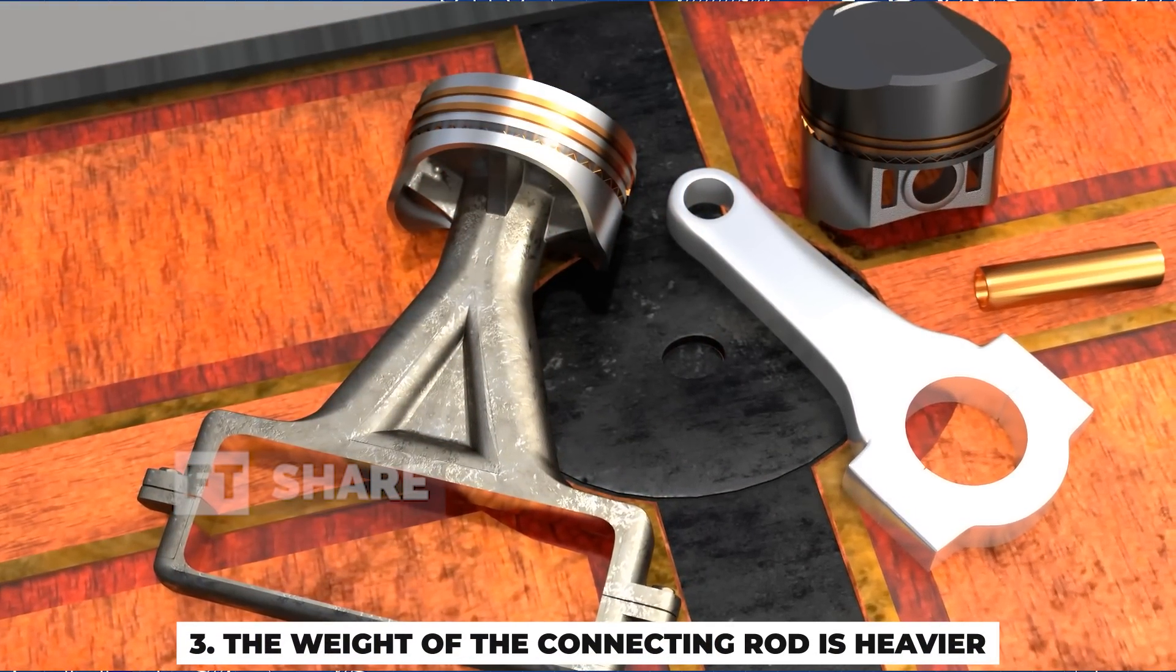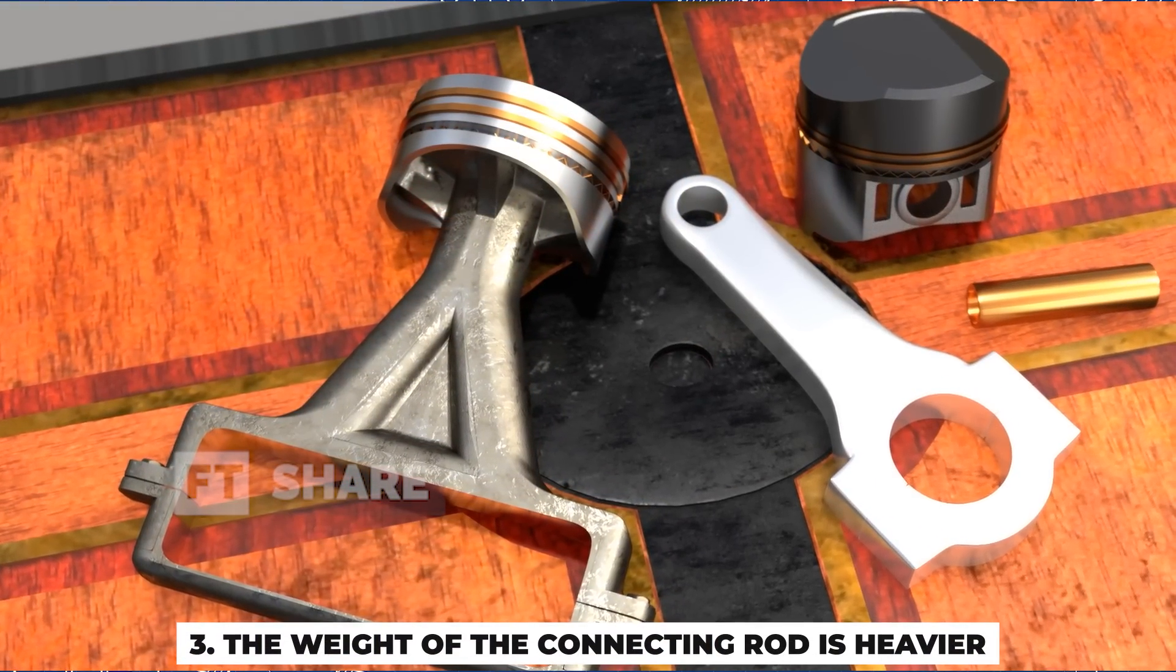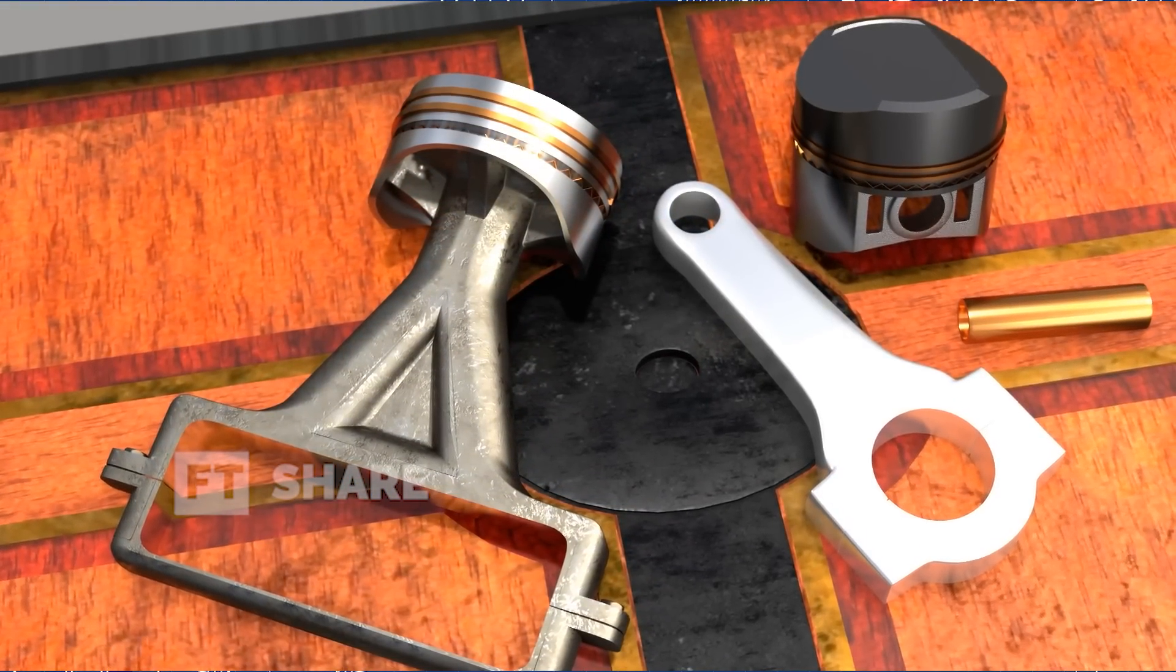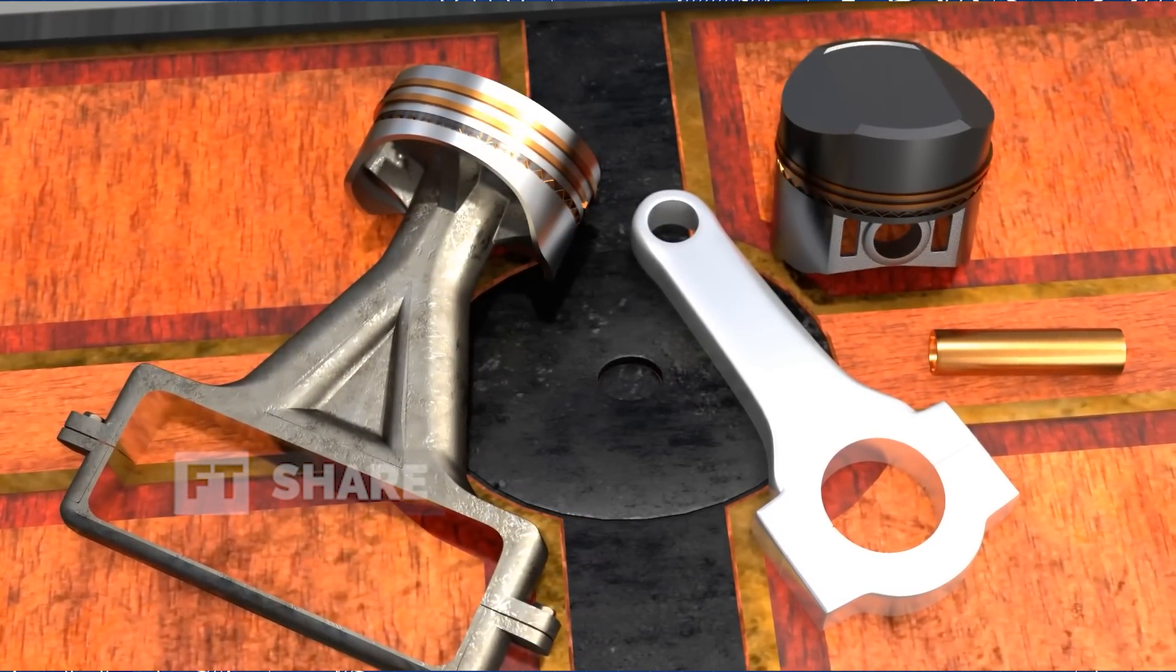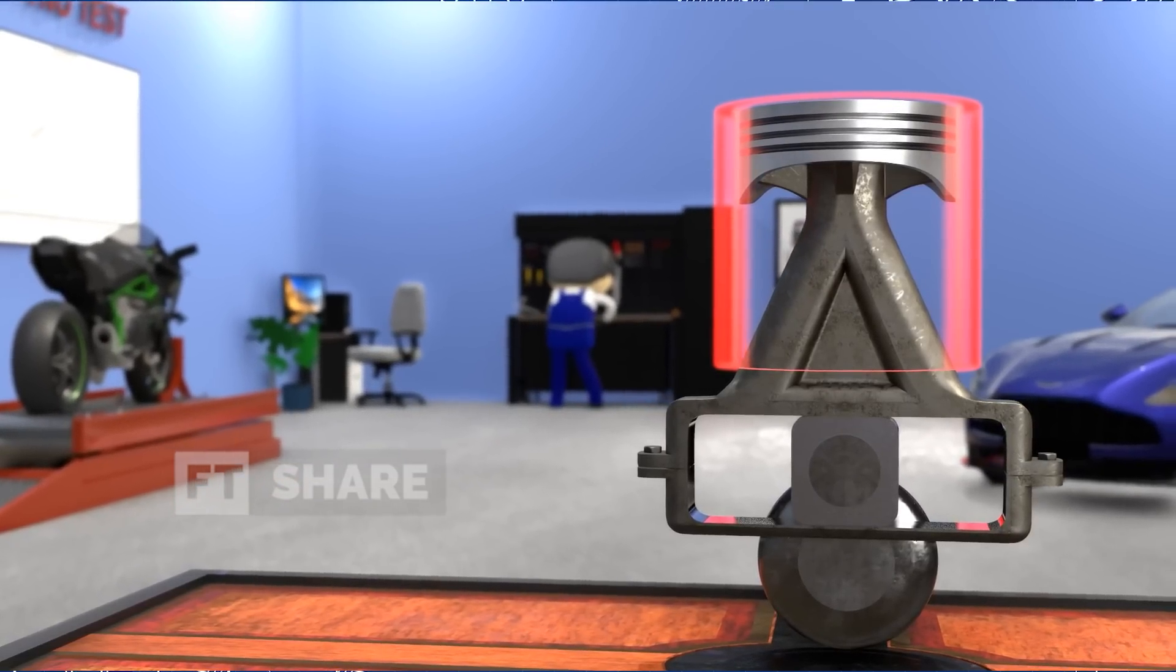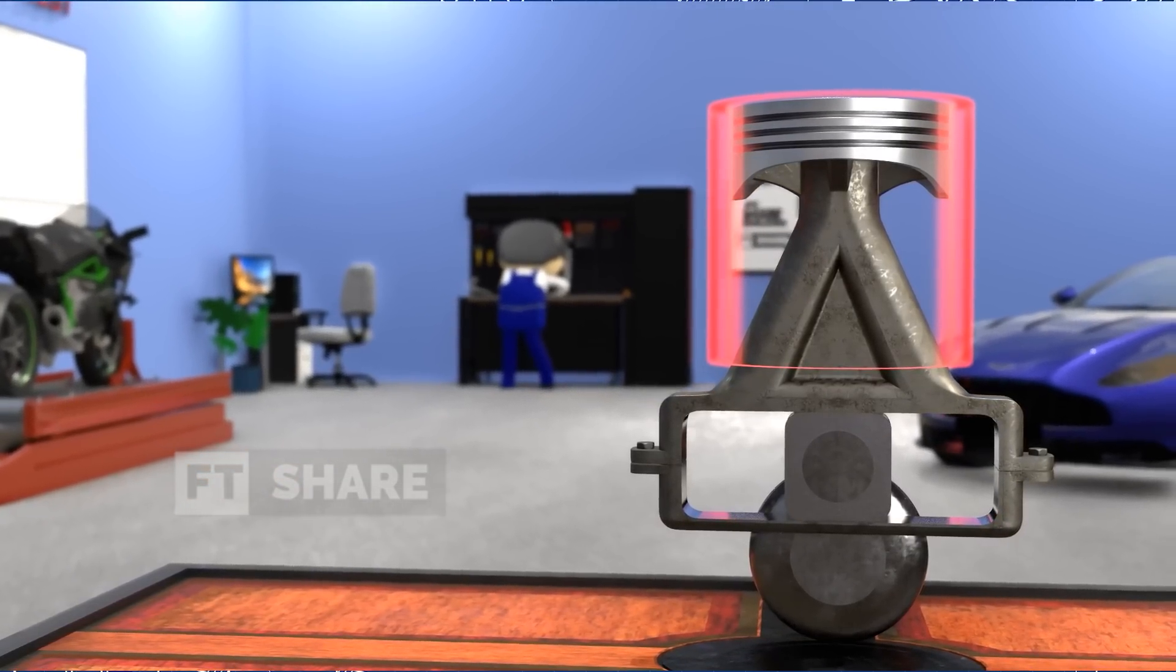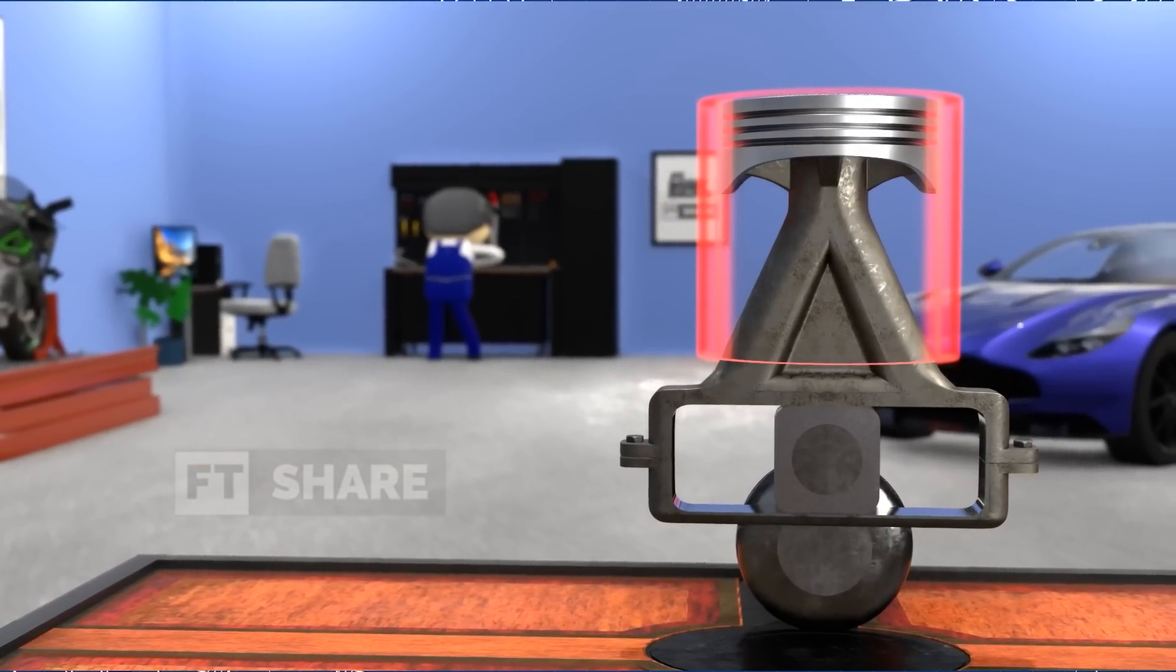Thirdly, the weight of the connecting rod itself is heavier. While there's a reduction in parts at the piston end, the added weight of this connecting rod is significantly greater. In essence, while the engine boasts advantages like improved piston dwell time and claimed smoother vibrations, it comes at the cost of these three aforementioned factors.